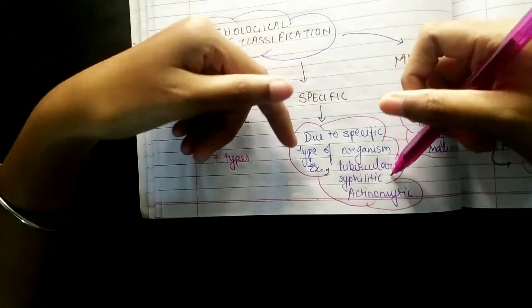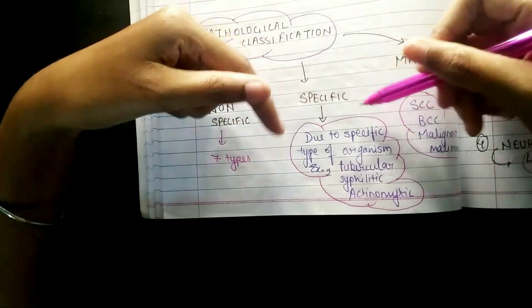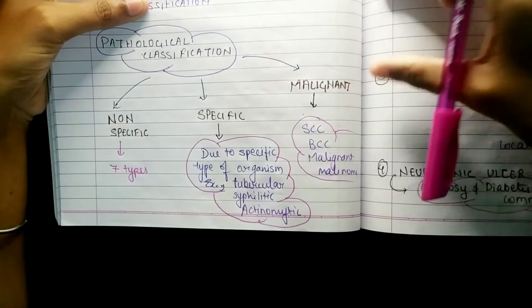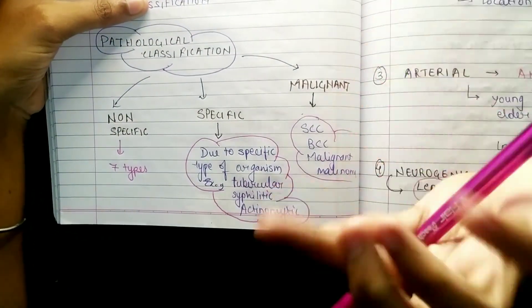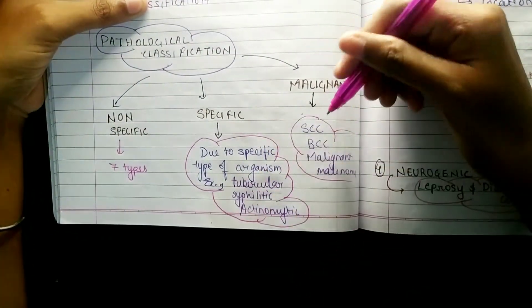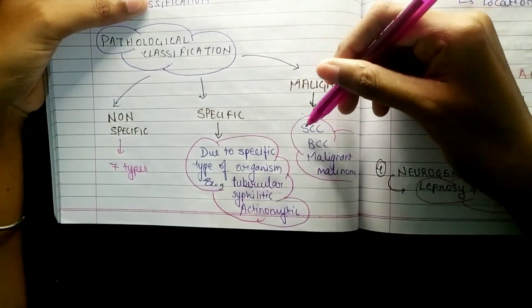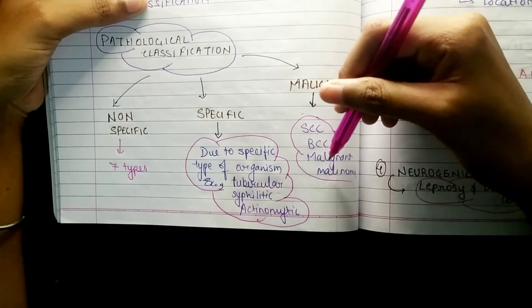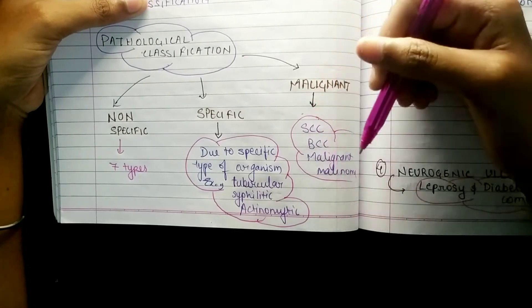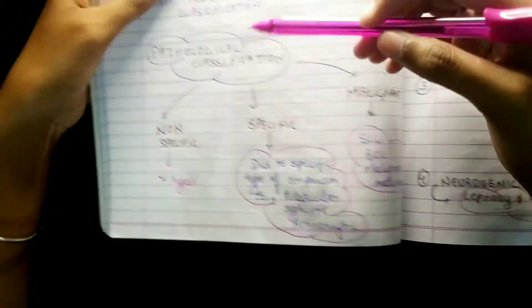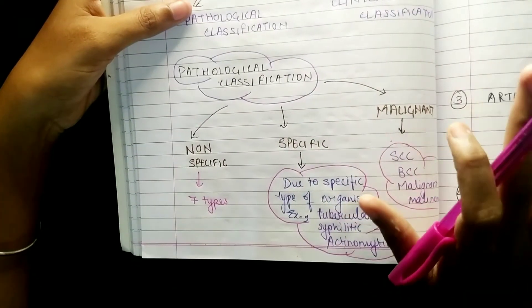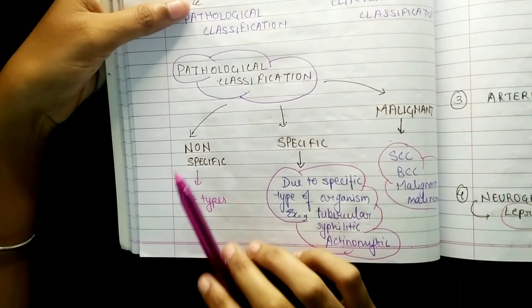Coming to malignant ulcer, there are mainly three types: SCC that is squamous cell carcinoma, BCC that is basal cell carcinoma, and malignant melanoma. So specific and malignant are clear. Now coming to non-specific, which is of five types.